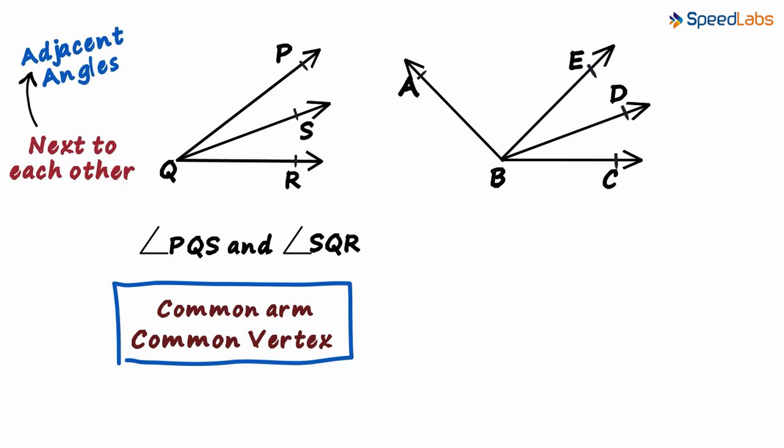If you can find all the adjacent pairs of angles in this figure, it means that your concepts of adjacent angles are clear. Remember, adjacent angles have a common arm and a common vertex. Pause the video for a moment and try to find all the adjacent pairs of angles.